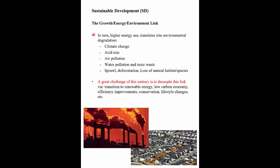Higher energy use associated with higher economic output translates into environmental degradation like climate change — the increase in CO2 and methane concentrations. We'll do a section on acid rain, where burning coal produces sulfur dioxide and kills our northern lakes. Even in a place like Ontario where we think our air is clean, there are something on the order of 8,000 or 9,000 premature deaths due to air pollution, estimated by the Ontario Medical Association. We also have water pollution, waste disposal issues, urban sprawl, deforestation, and we're losing natural habitat and species at a rate that rivals the great geological extinctions — we're into what's called the sixth great extinction.